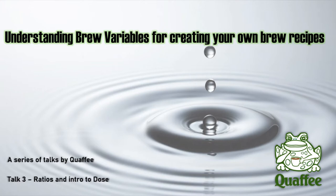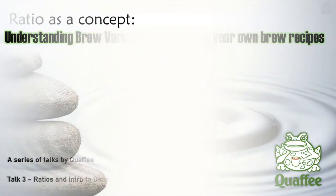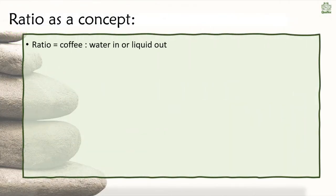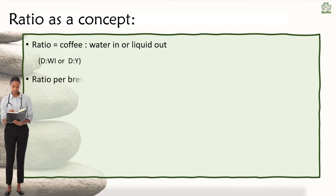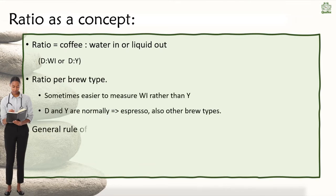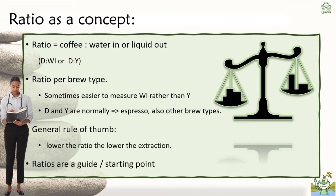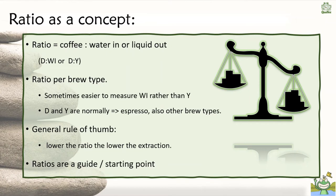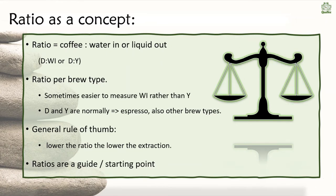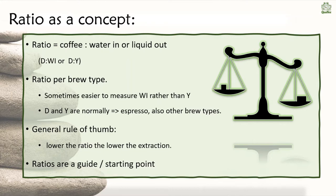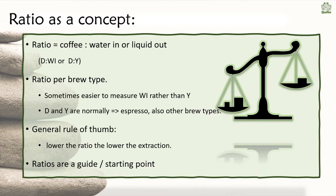For your own coffee, the way you like it. Today we're going to start with ratios and get started on dose. To cover dose is going to require a full talk because it is linked to dose, yield, and time. So let's start with ratio as a concept. Ratios basically link the amount of water in, or liquid out, or water in to dose or yield — that will vary depending on the type of brew that you are doing. Typically in espresso we measure dose and yield.